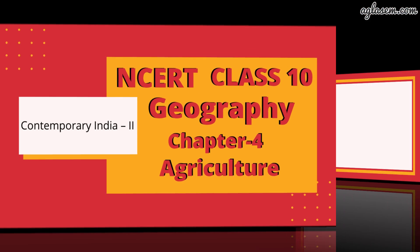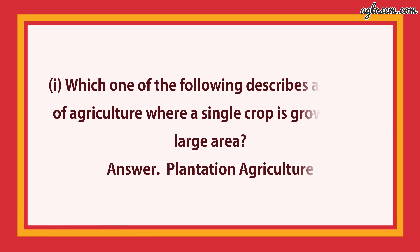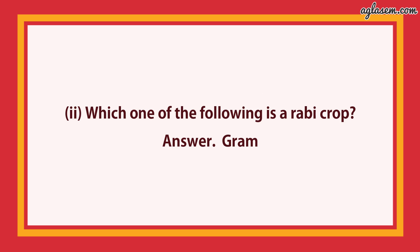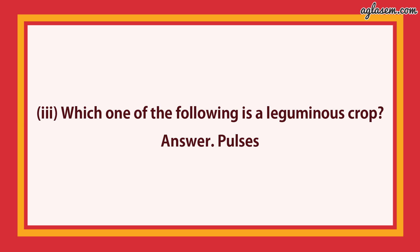Question number 1: multiple choice questions. Part 1: which one of the following describes a system of agriculture where a single crop is grown on a large scale? Answer is plantation agriculture. Second: which one of the following is a rabi crop? Answer is gram. Third: which one of the following is a leguminous crop? Answer is pulses.